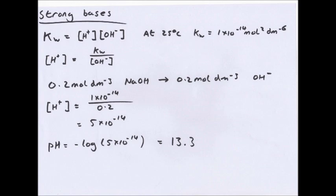For bases, if you have a monobasic base, one mole produces one mole of OH⁻; dibasic produces two moles of OH⁻. So 0.2 mol dm⁻³ of NaOH gives 0.2 mol dm⁻³ of OH⁻. Then [H+] = Kw / [OH⁻] = (1 × 10⁻¹⁴) / 0.2. Put that into the pH formula. Alternatively, do −log(0.2) = 0.7 then subtract from 14 — you get the same answer.